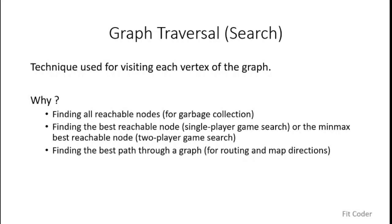Third is navigation systems or routing mechanisms. You are given a map of a city and you have to find the best possible route to reach a destination. In those cases you need to traverse through many vertices and edges to find the best path. There are various applications where graph traversal or graph search is needed, so we have established that we need to study graph search.